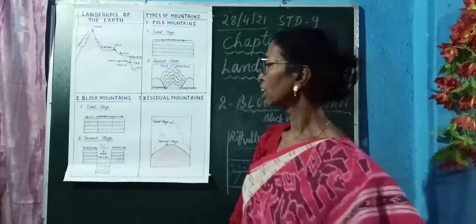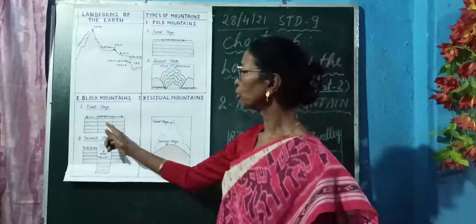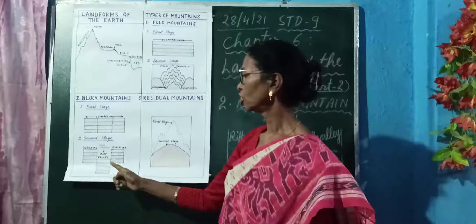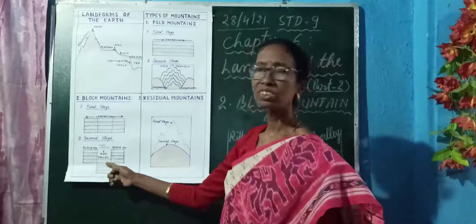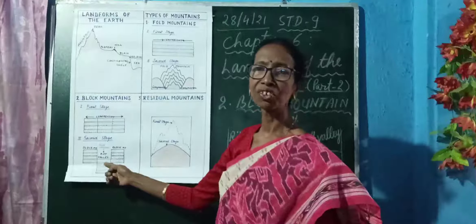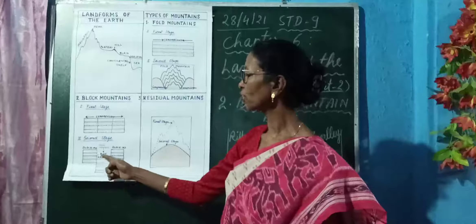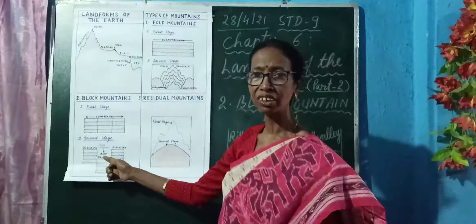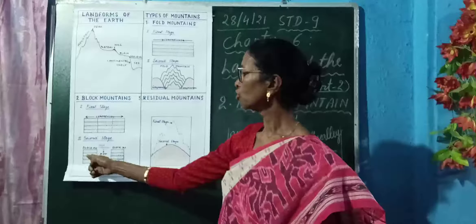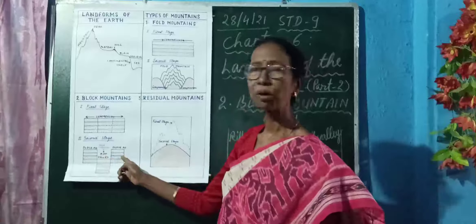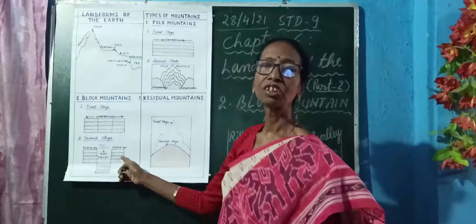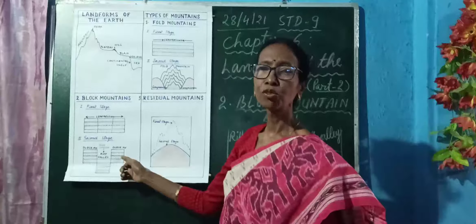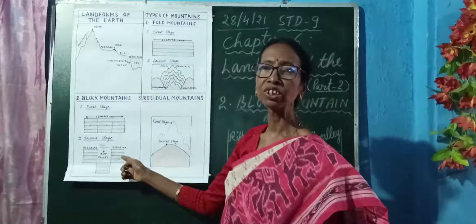When the landmass between these two parallel cracks sinks down or subsides, it forms a valley known as a rift valley. And beside it, the upraised parts that are formed are the block mountains.